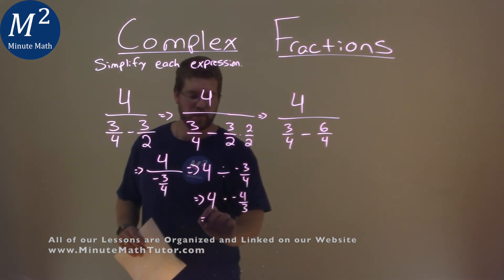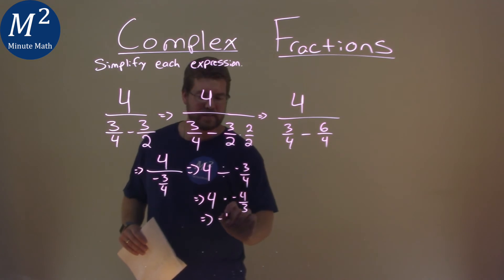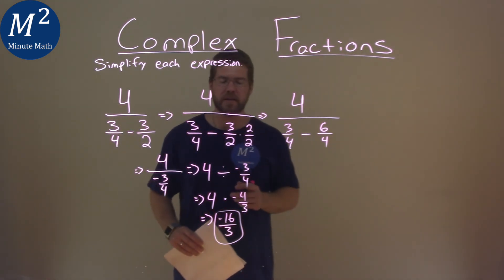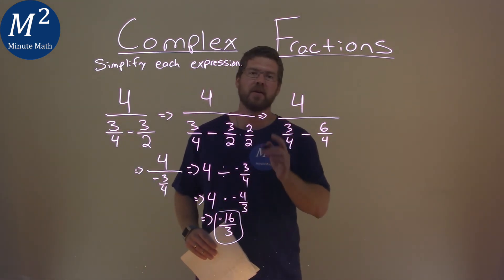Continue on going, 4 times a negative 4 is a negative 16, divided by 3, and that's it. It doesn't break down anymore, and so our final answer here is a negative 16 over 3.